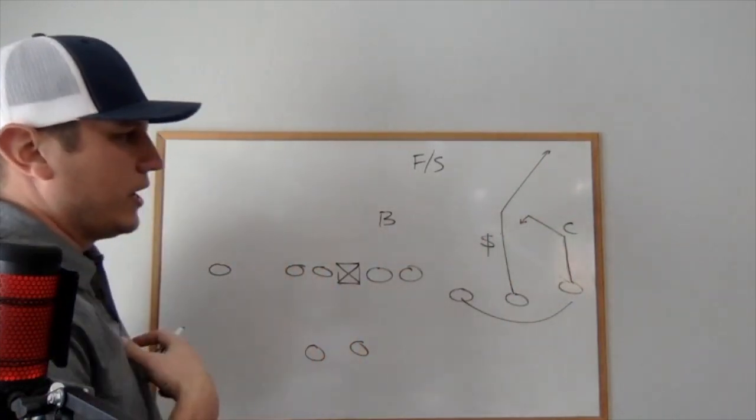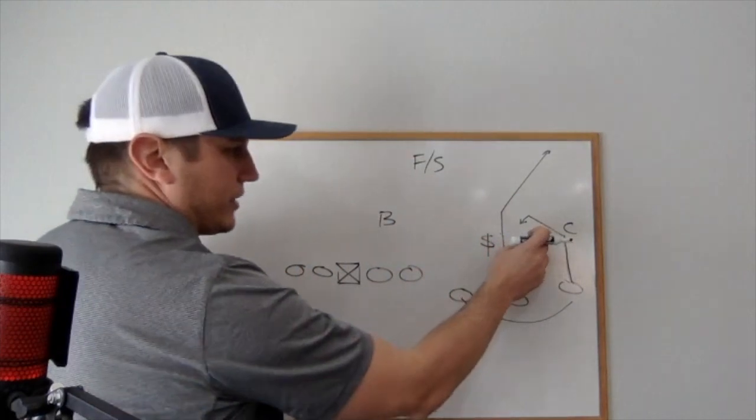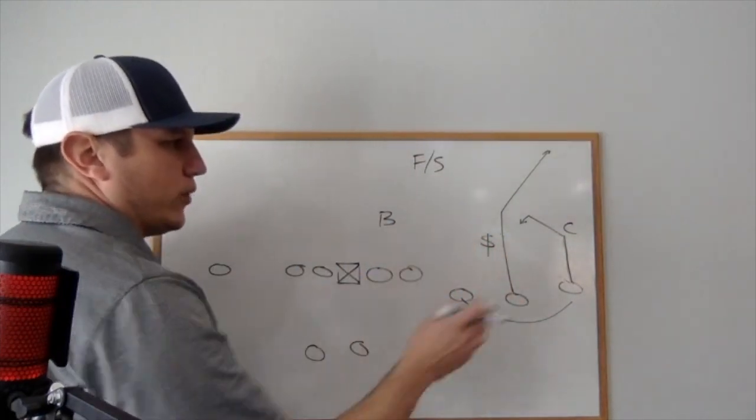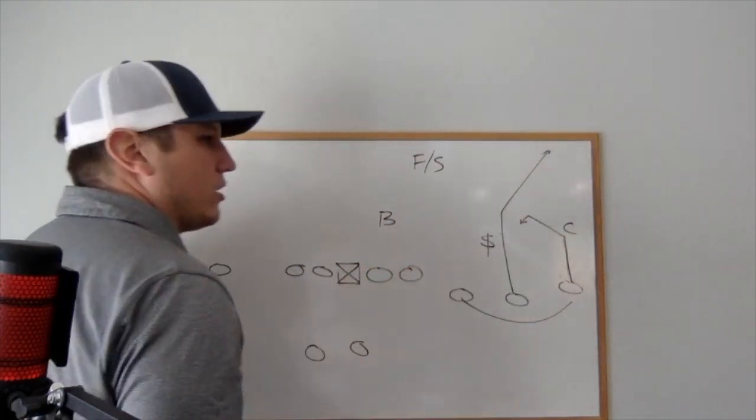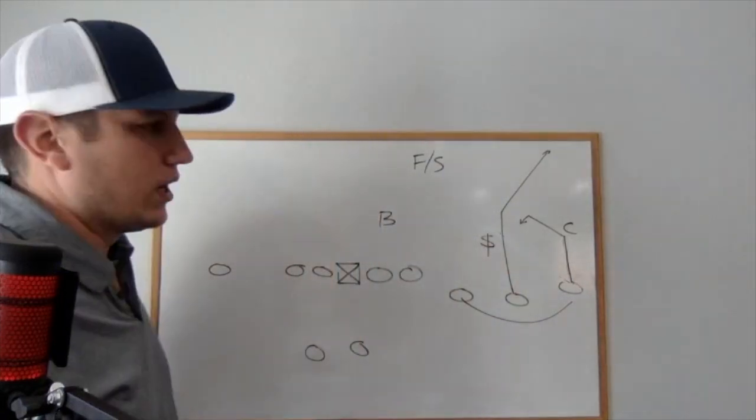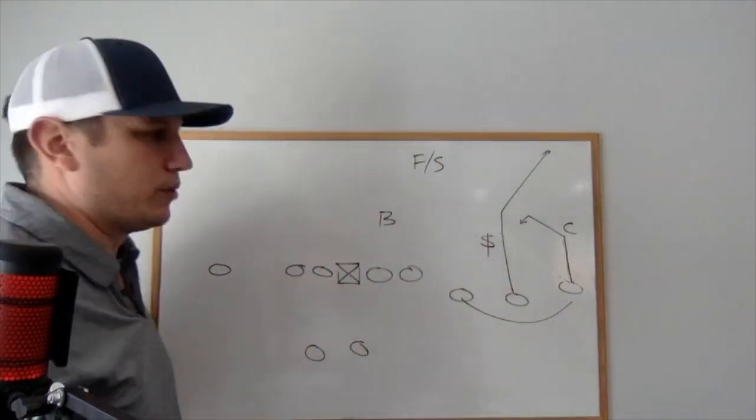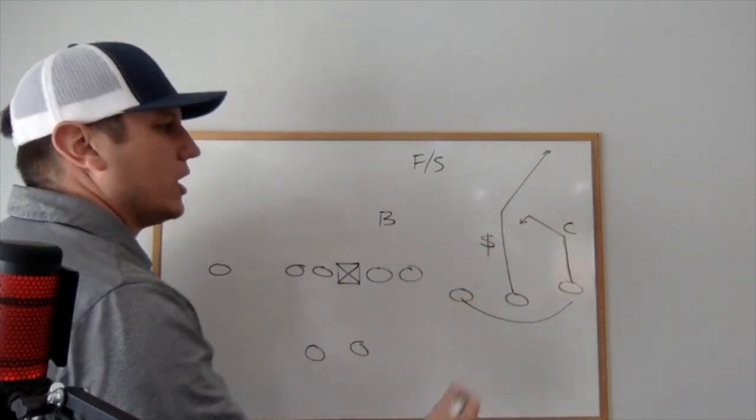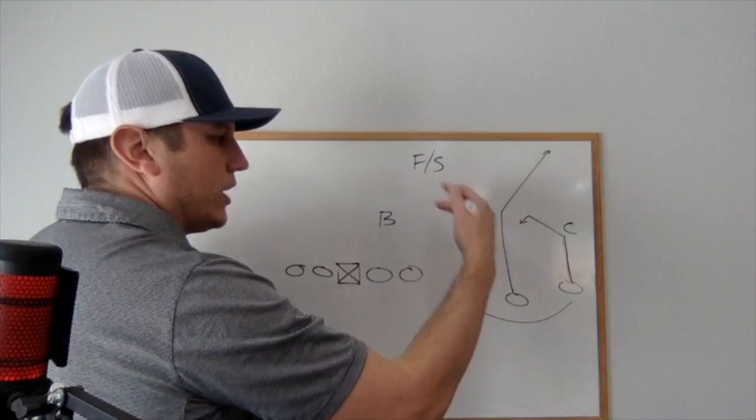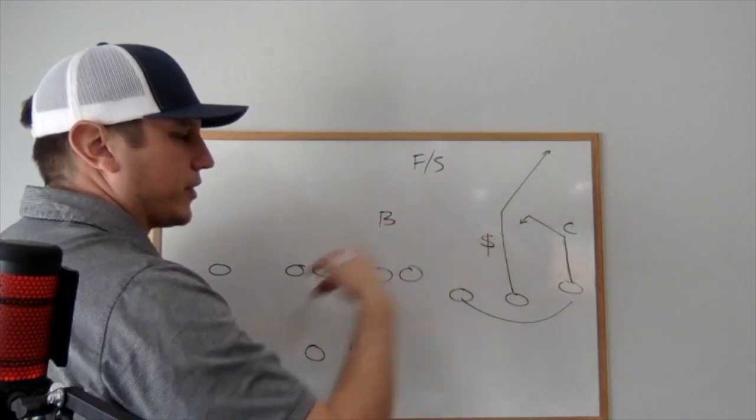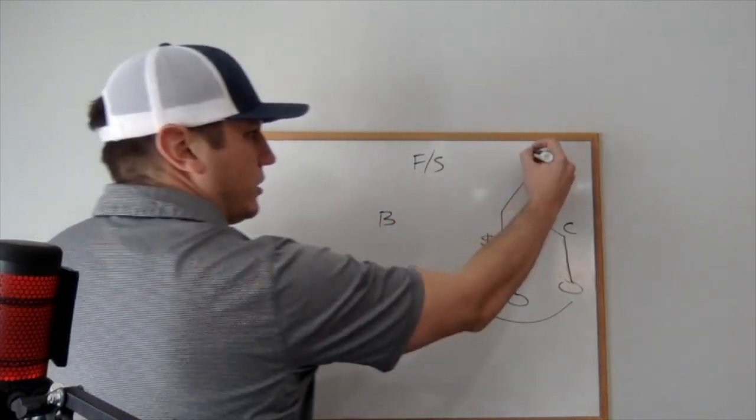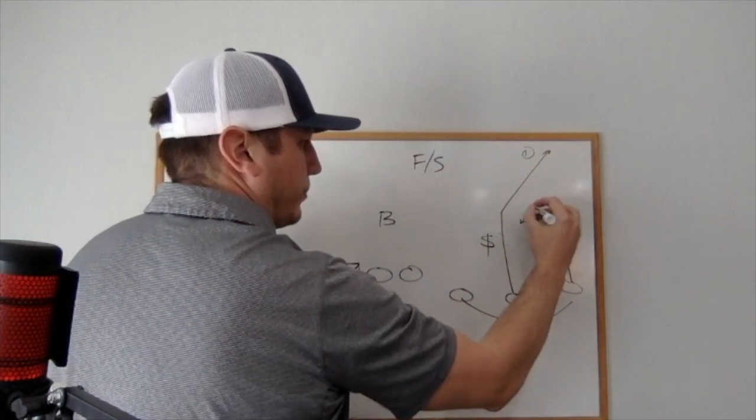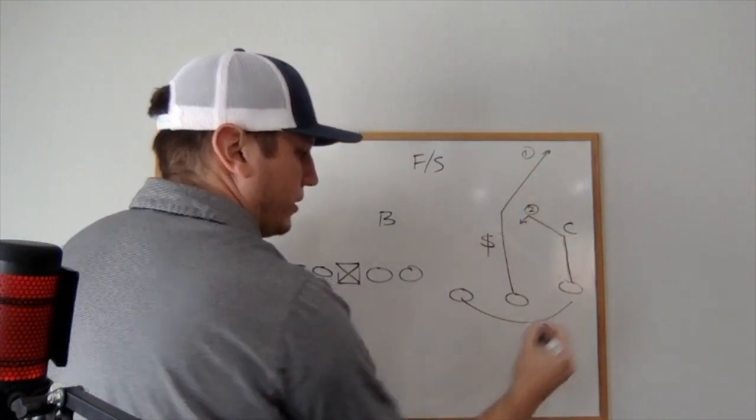And so for us, we really like this again because it clears things up. We get the corner, if he's playing man, we're hopefully getting him out of his pedal and maybe turning his hips a little bit. But we're attacking hard off the line of scrimmage for six yards, getting across at two and then we're going to spot up. Okay, so for us the reads are just like probably how most people would be doing this: one, two, three.